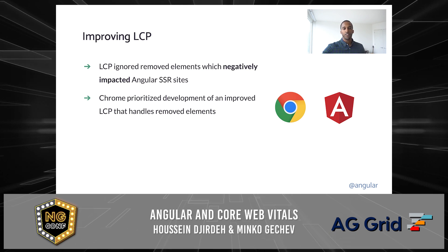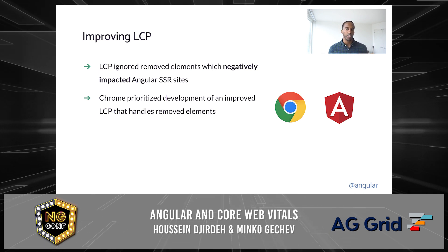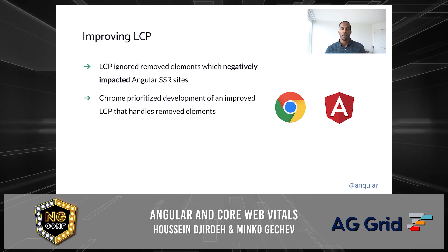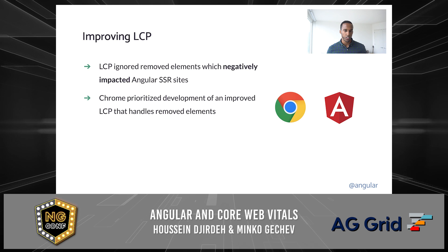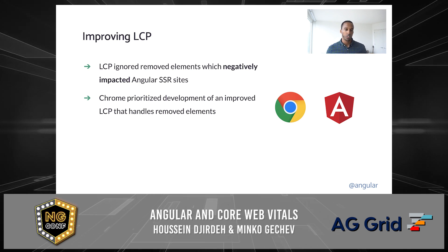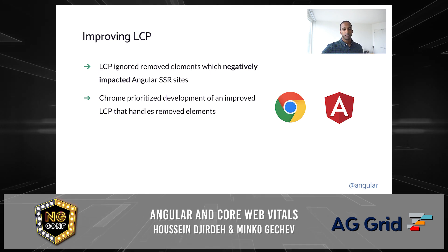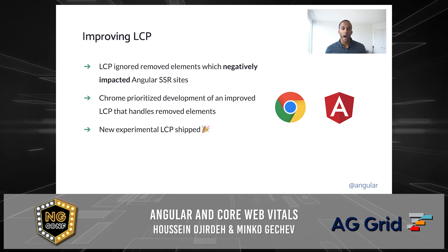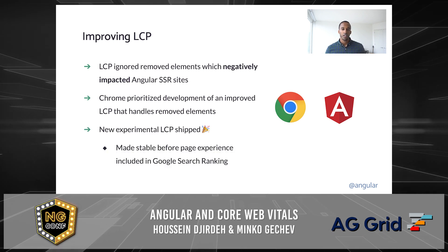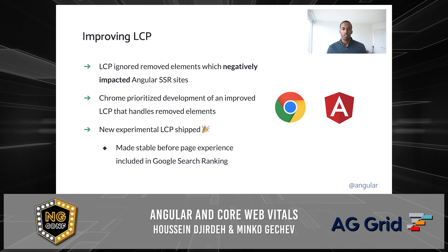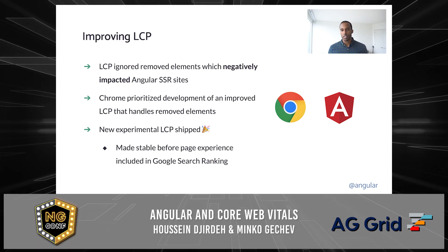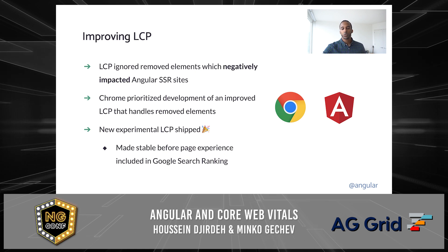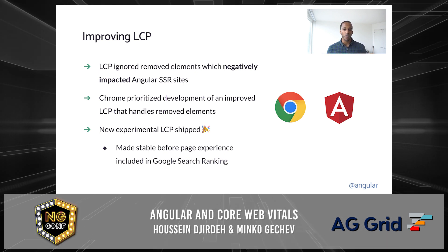After the Angular team and community flagged the issue with how LCP is measured in server-rendered applications, the Chrome Speed Metrics team prioritized the development of an improved version of the metric that does take into account removed elements. Once the required changes were made and testing was done, the new version of the metric was switched from experimental to stable and was updated in both the web performance API and internally within Google. This was all done before page experience, including Core Web Vitals, would be included in Google search ranking.